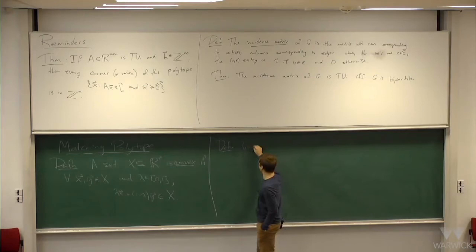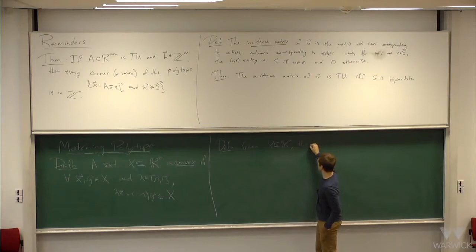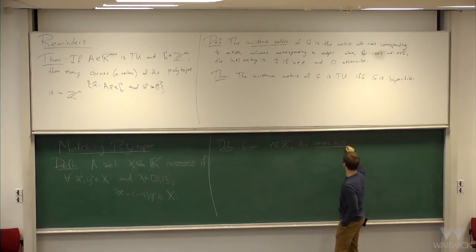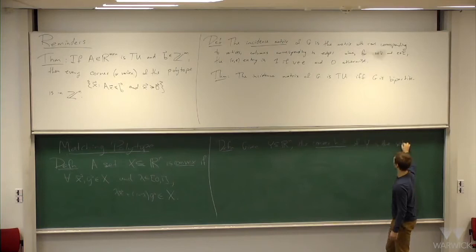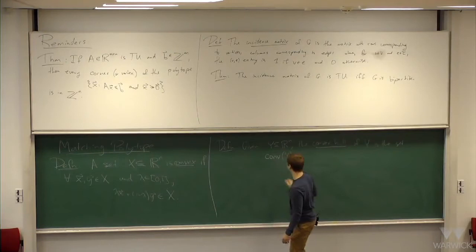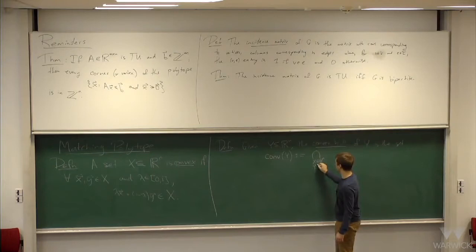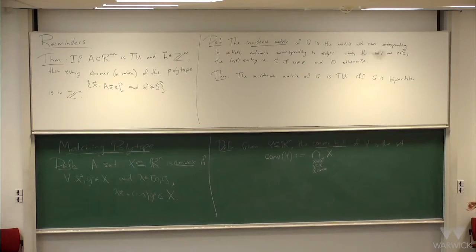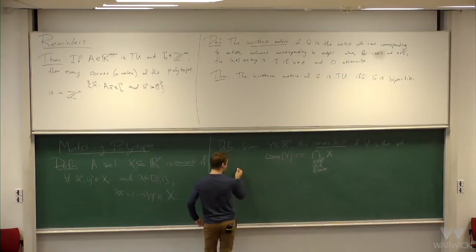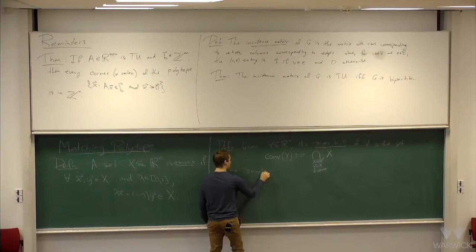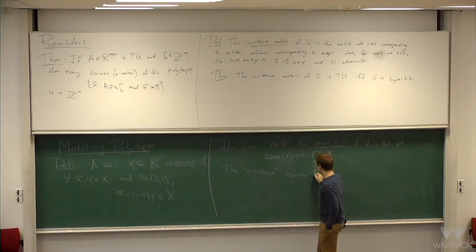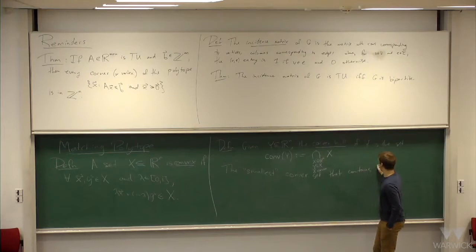Another definition is the convex hull of a set. Given a set y, the convex hull — denoted conv(y) — is defined to be the intersection of all convex sets x contained in R^n such that y is contained in x. So it's the intersection of all convex sets that contain y. You should think of this as the smallest convex set that contains y.